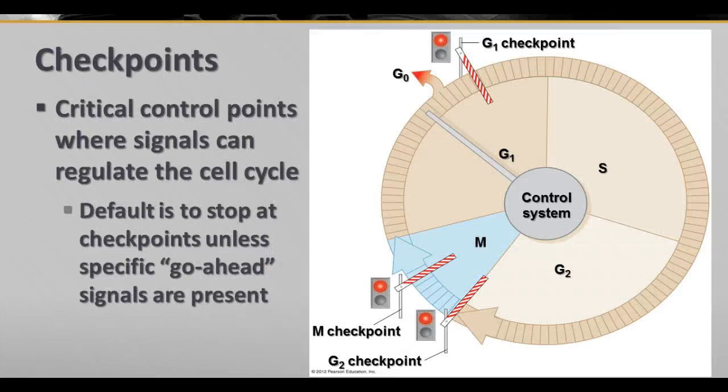What scientists have determined is that there are checkpoints in the cell cycle — these are control points where there are signals that can regulate the cell cycle. They've determined that there are three major checkpoints in the cell cycle.